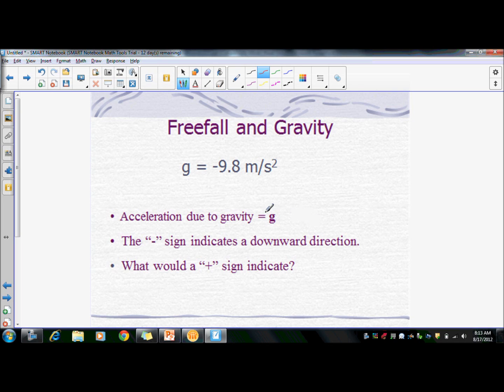We denote acceleration due to gravity by lowercase g, and this has a specific value. So g will always have the value negative 9.8 meters per second squared. Notice this is two time components, which means that g is the same as an acceleration. A and g are interchangeable.